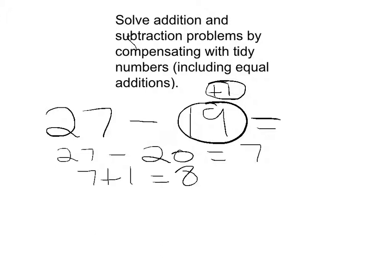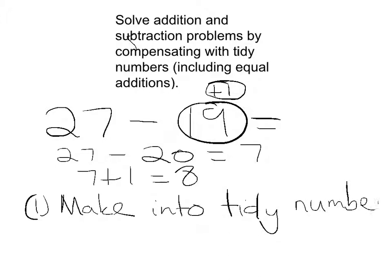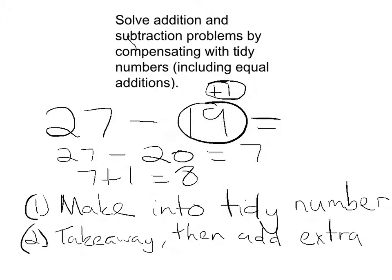So let's quickly go back over those steps. Number 1, make into tidy number. That's the first thing we need to do. And the second thing we need to do is take away, then add extra number. So those are the two steps. We're going to do some examples now together, so that you get the idea.